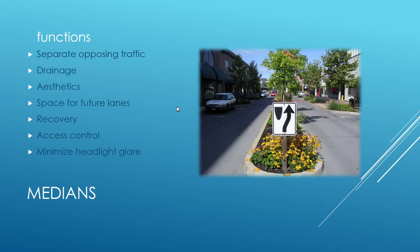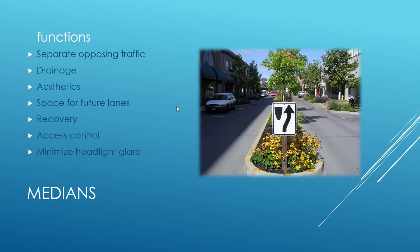Medians are typically found in urban road sections, though occasionally in rural environments on larger roads. They separate opposing traffic, provide aesthetics, help promote drainage, and also serve as space for future lanes. On GB road, they're planning to add more medians to separate traffic and control where drivers use the center turning area. Plantings in medians also help minimize headlight glare.